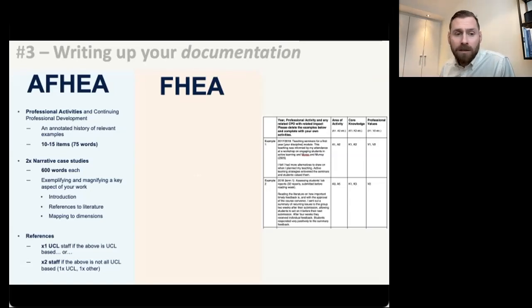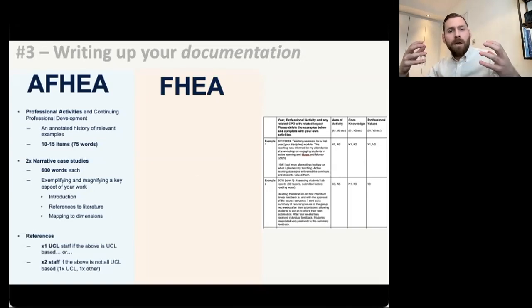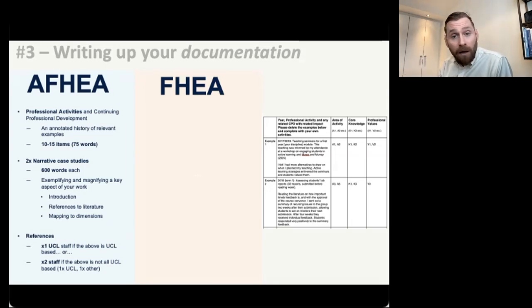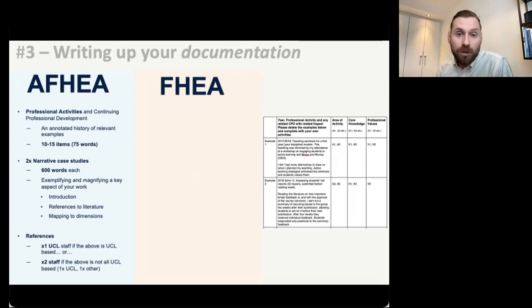That impact narrative is really important, and that applies for the associate fellowship as well as the fellowship. You might also like to think about themes you'd like running through this — maybe your emphasis is around building relationships, or justice in the classroom, or creating dialogue, or creating a sense of community. And finally, you're going to be submitting references. If all of the work you've spoken about is based at UCL, then you only need one reference — someone who has HEA recognition, ideally at fellow or senior fellow level. If it isn't all to do with UCL, you'll need someone from UCL and someone from the other institution.